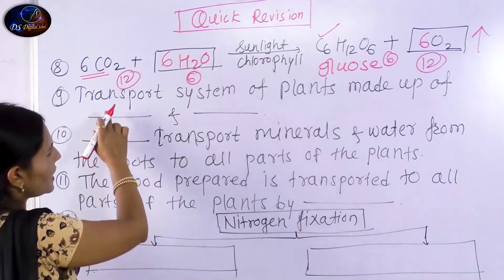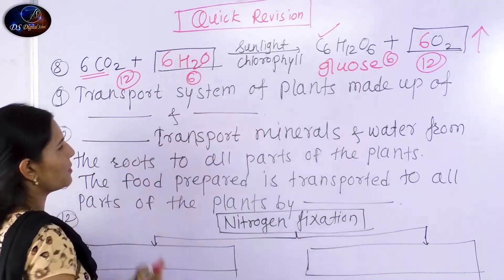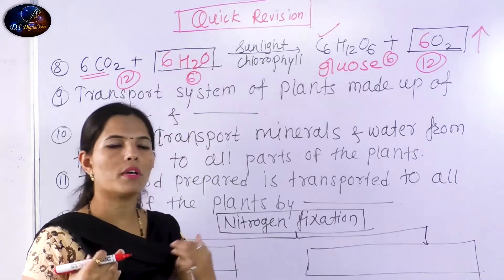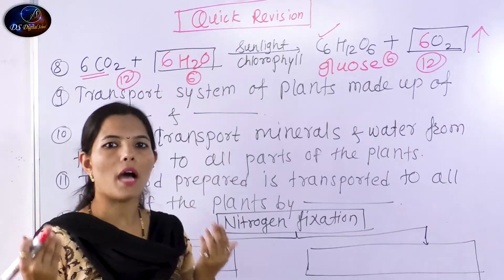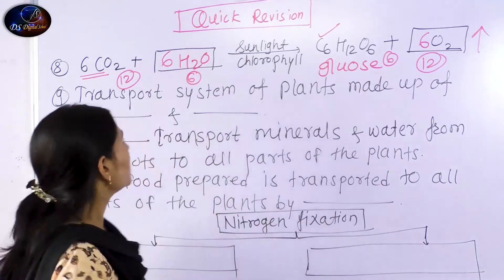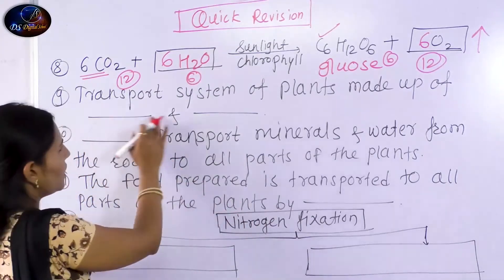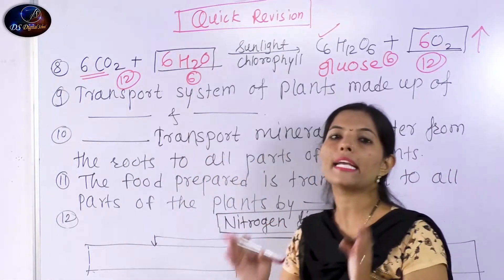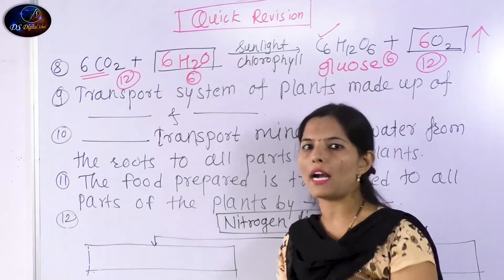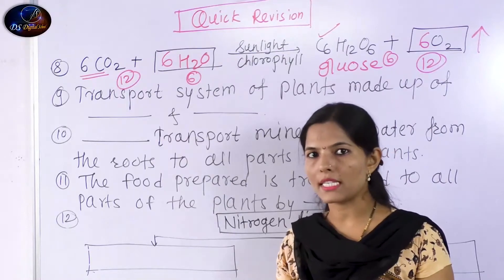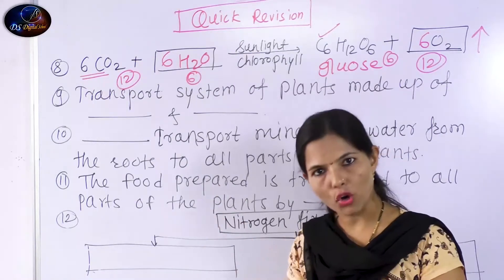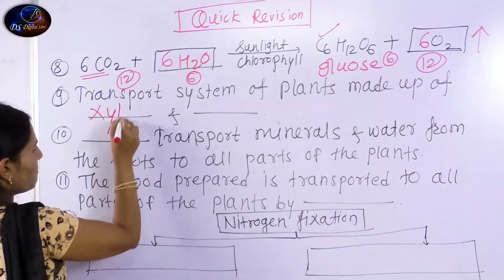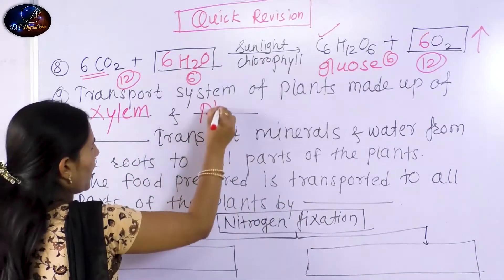The next question is about the transport system of plants. Just like your body has arteries and veins, plants also have a transport system. It is made up of two parts: xylem and phloem.